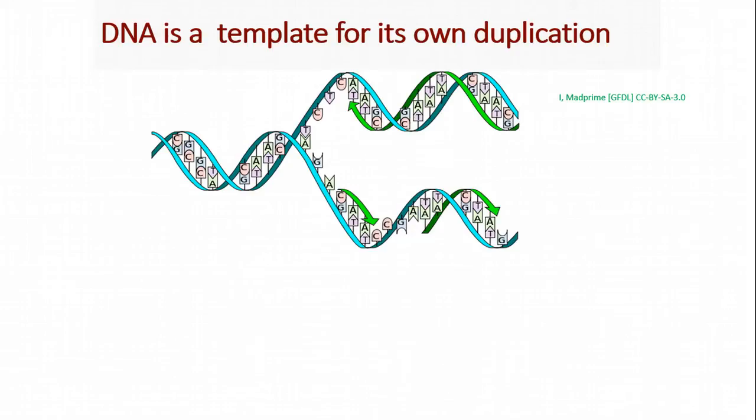Because we know that T always binds to A and G always binds to C, if we break our DNA molecule in half, we can replace the other half of that DNA molecule with this knowledge.